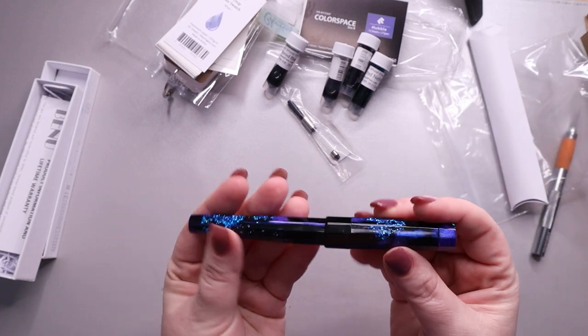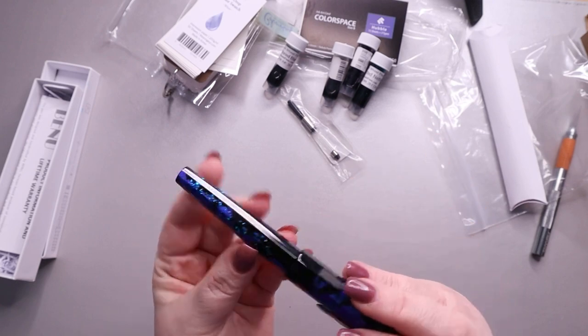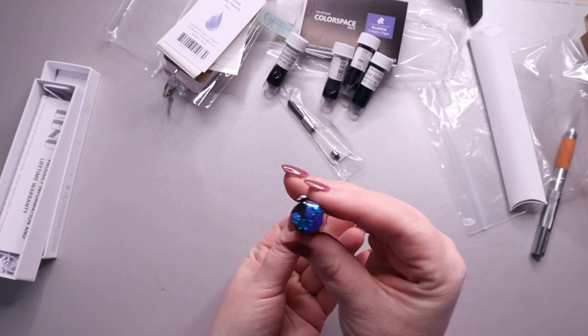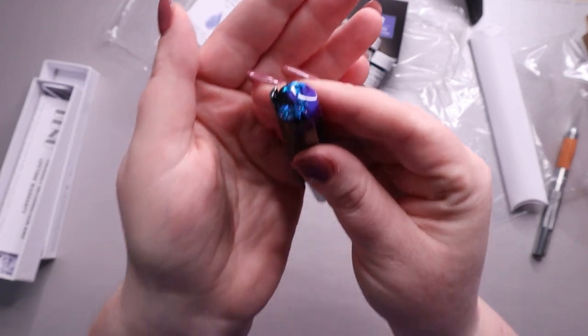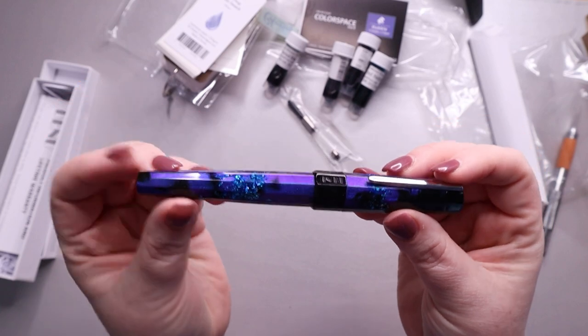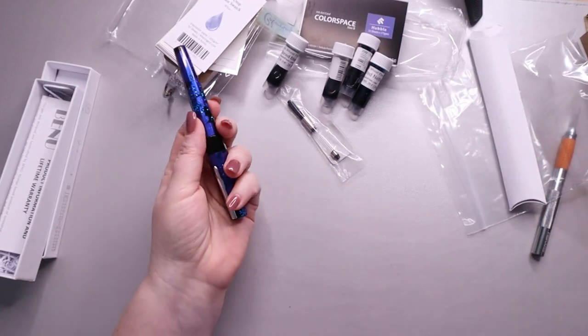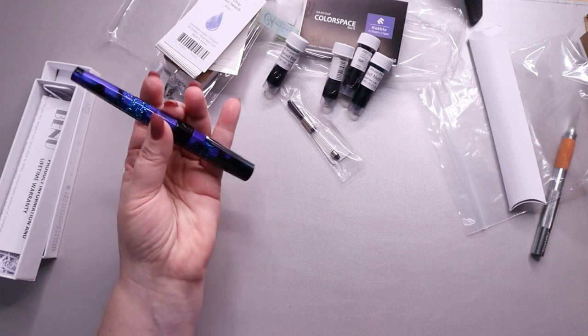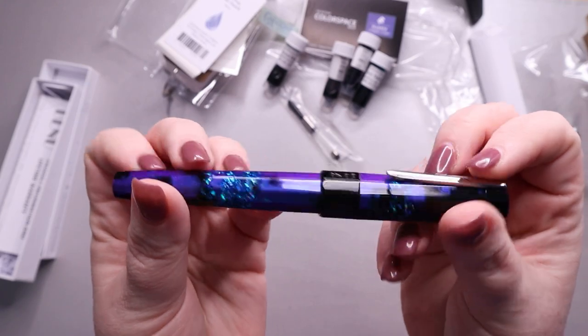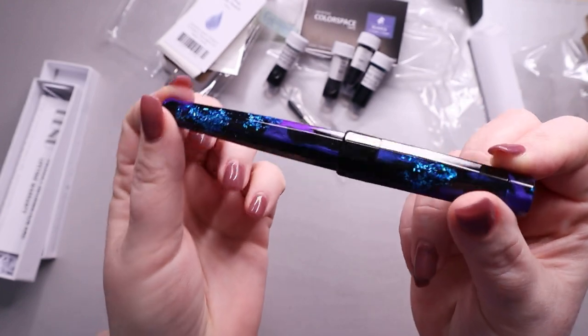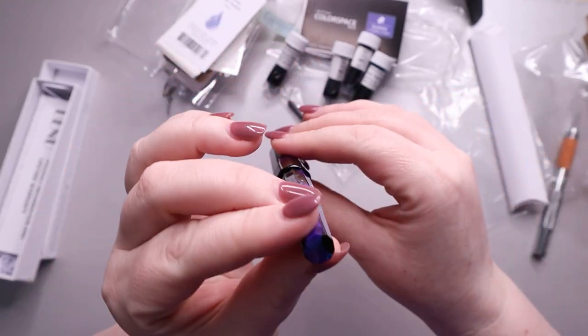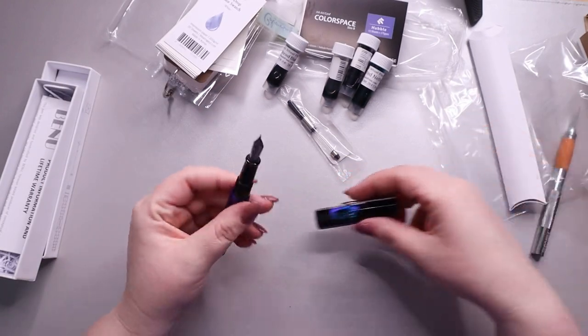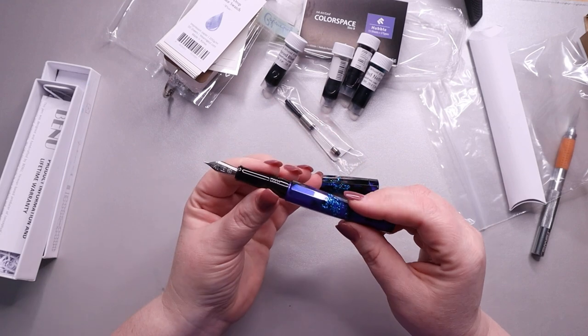So drum roll, this is our new pen. Look at how pretty it is. It's purple and has these blue flakes and the black. It is just absolutely gorgeous. So this is the Benu French Poetry. I had seen this and I was like, oh my gosh, I love that so much. I just decided I wanted a second Benu, so I purchased one.